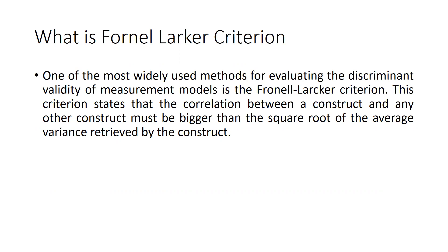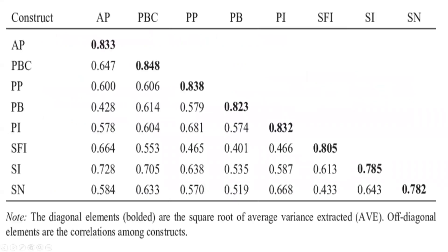Let me show you how we calculate this. These are the constructs — AP, PVC — all listed vertically and horizontally, and we just want to check the correlation between these constructs. The diagonal elements that are bolded are the square root of the Average Variance Extracted (AVE), and the off-diagonal elements are the correlations among the constructs.